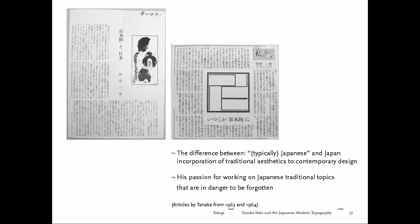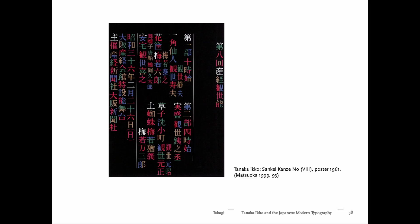Tanaka described his passion for Japanese traditional topics and the danger of tradition being forgotten. Another poster became an iconic work. Interestingly, while much of the information that makes a design Japanese rather than Chinese comes from using kana and hiragana, Tanaka in his design focused quite a lot on kanji. This poster for Sankei Noh mainly uses only kanji, giving a colorful code to it — demonstrating clear structural and visual strength.